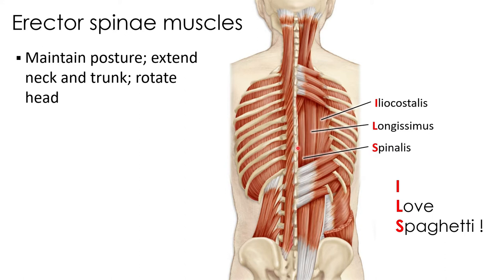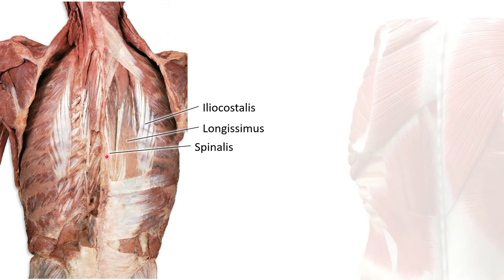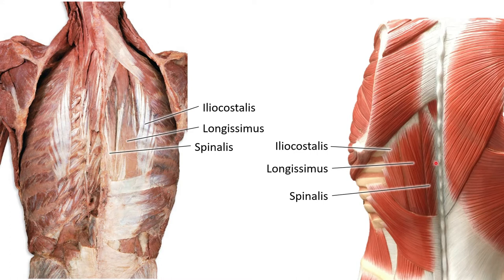This is another view showing where these muscles are located — a posterior view of a cadaver with some superficial muscles removed. You can see the iliocostalis, the longissimus, and then the spinalis. On one of our lab models, you can again see all three: the iliocostalis, longissimus, and spinalis.